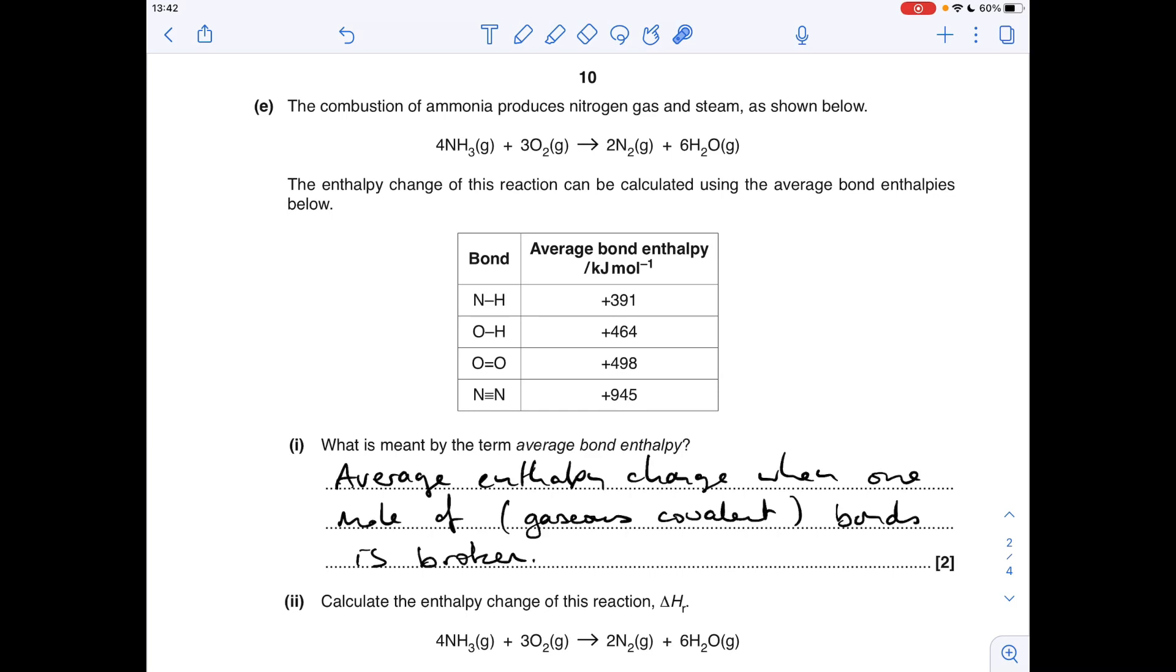The question now moves into the enthalpy topic. Part E, first bit: what's meant by the term average bond enthalpy? That's the average enthalpy change when one mole of gaseous covalent bonds is broken. The 'one mole' isn't essential, but it's technically in the definition.